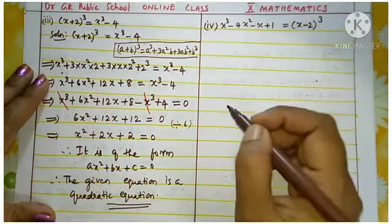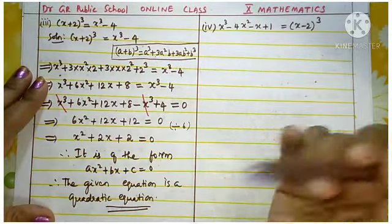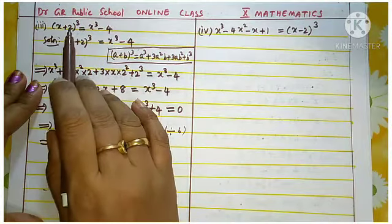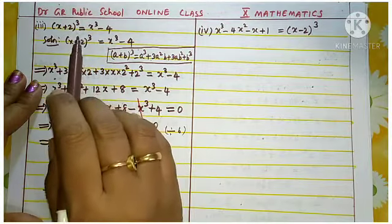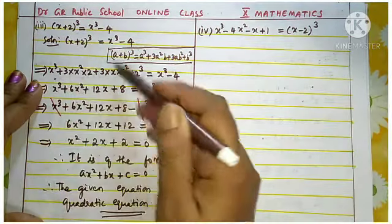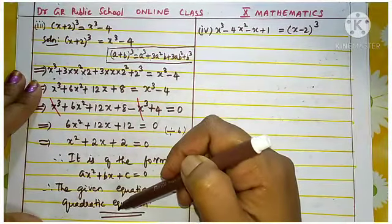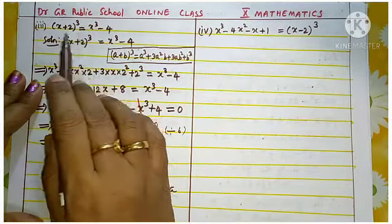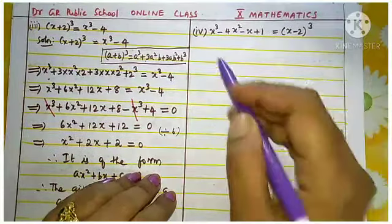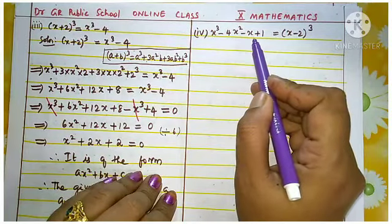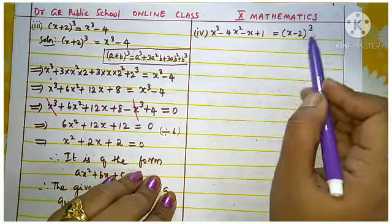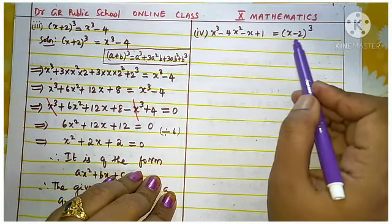Here we applied the identity a plus b the whole cube and solved the steps. Finally we confirmed this is a quadratic equation. Note that when you see power 3 in the question, you might think it is cubic, but when you simplify you get a quadratic equation. So don't just look at the question — work through the steps. The fourth question: x cubed minus 4x squared minus x plus 1 equal to x minus 2, the whole cube.